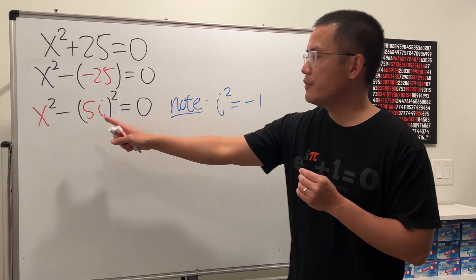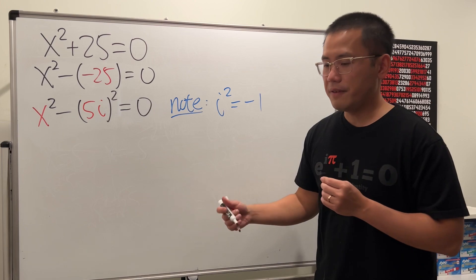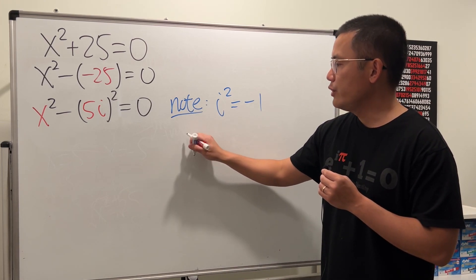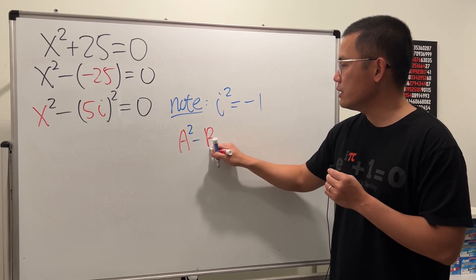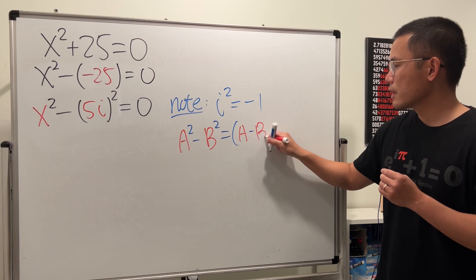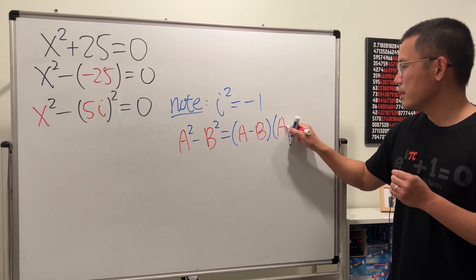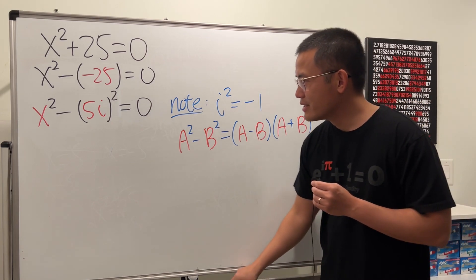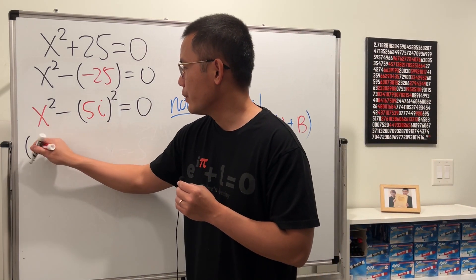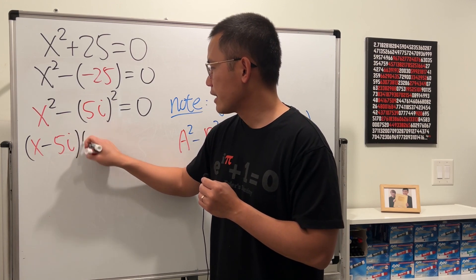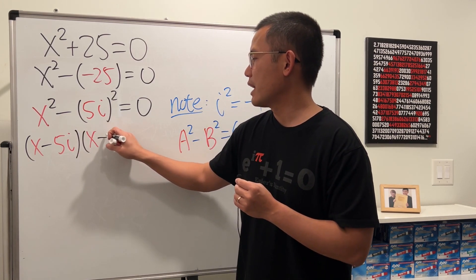Next, we have a difference of two squares now. So we can factor with the difference of two squares formula. So another note is that if we have a² - b², this is just equal to (a - b)(a + b). Like this. So this right here, we can factor it, and we get (x - 5i)(x + 5i).